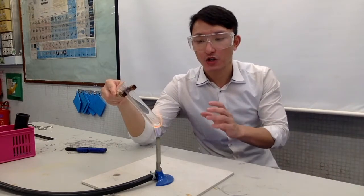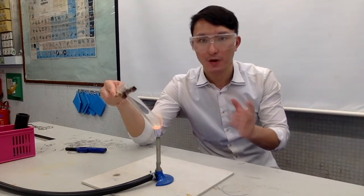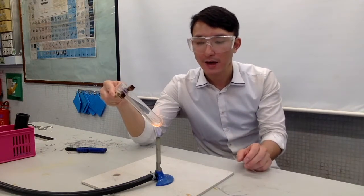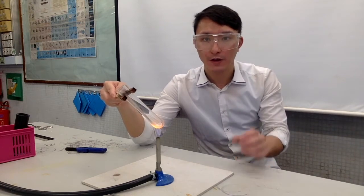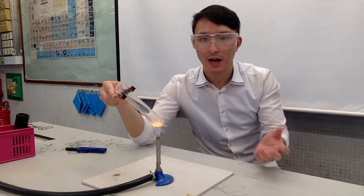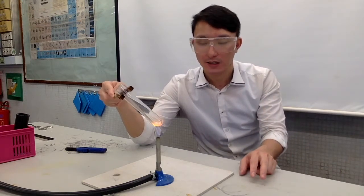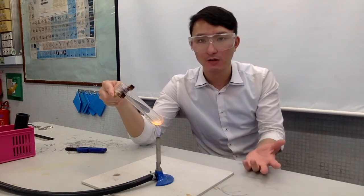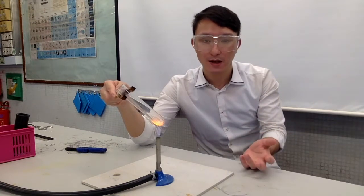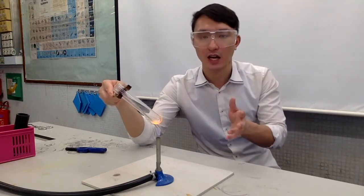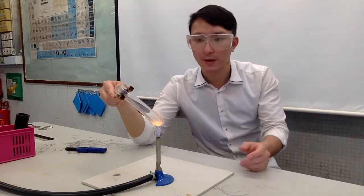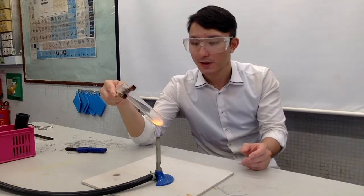What we are doing here is thermal decomposition of calcium carbonate. You would expect the products to be calcium oxide — also known as quicklime — and carbon dioxide. However, calcium oxide is a white solid and calcium carbonate is also a white solid, so you don't really see any color change. Carbon dioxide is a colorless gas, so you won't expect to see any observable change.